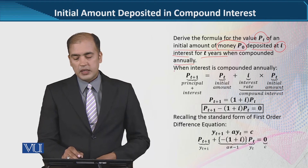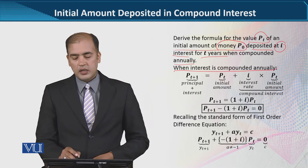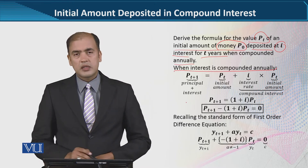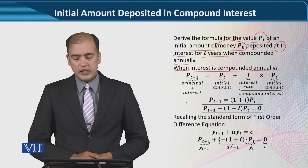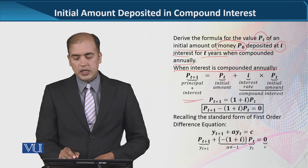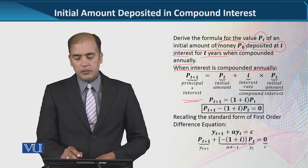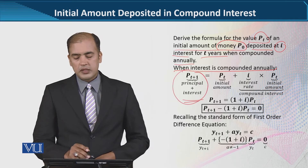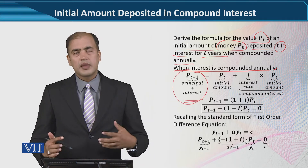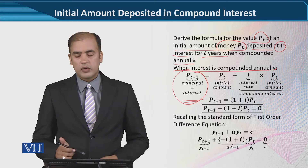So, when interest is compounded annually, this is the principal and interest sum, and that is Pt+1. This is the compounding process.